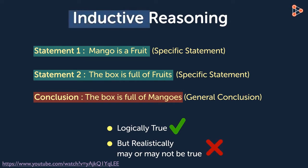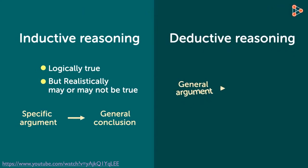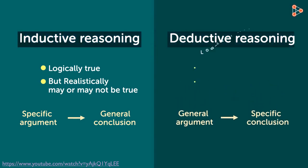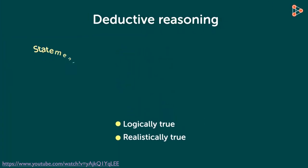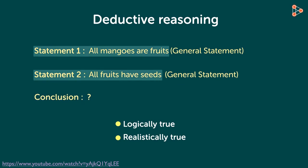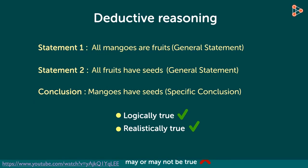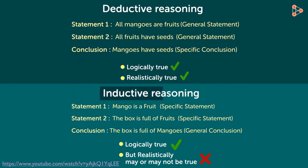On the other hand, we have deductive reasoning, where the approach is from a general argument to a specific conclusion. Unlike inductive reasoning, deductive reasoning is always true. For example, Statement 1: all mangoes are fruits; Statement 2: all fruits have seeds. The conclusion is that mangoes have seeds — and this conclusion will always be true. These two examples give us a clear idea about inductive and deductive reasoning.